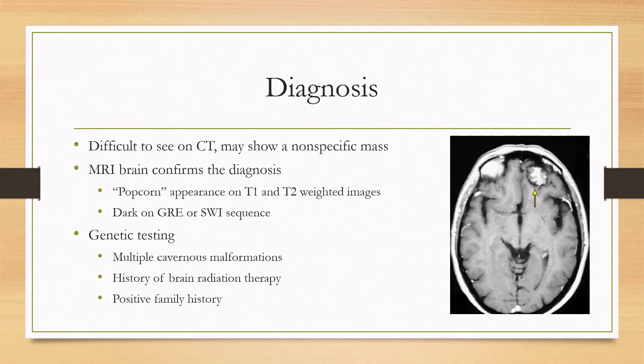For genetic testing, there are three main indications: if you detect multiple cavernous malformations, if there's a history of brain radiation therapy, or a positive family history — then the CCM gene mutations are sent.